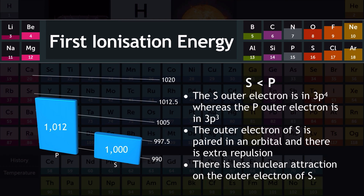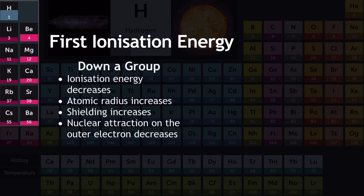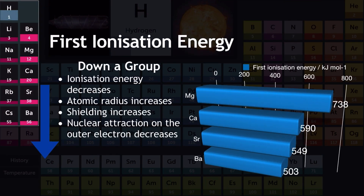That explains the two anomalies that break the general trend of increasing first ionization energy across period 3. Down the group, the trend in ionization energy is a decrease — across the period it increases, whereas down a group it decreases. There are no anomalies here, just two clear reasons: atomic radius increases and shielding increases, so nuclear attraction on the outer electron decreases.